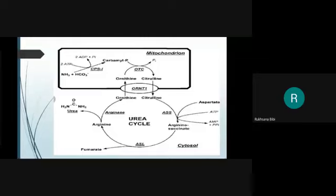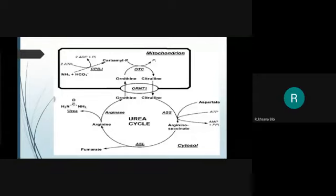Arginine is then cleaved by arginase enzyme to produce urea and ornithine. The urea is released into the bloodstream, concentrated in the kidney into urine, and excreted. The ornithine is transported back into the mitochondria so the urea cycle can start again.